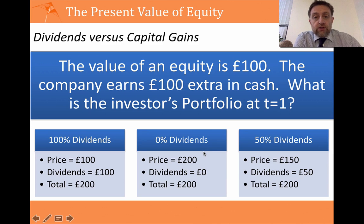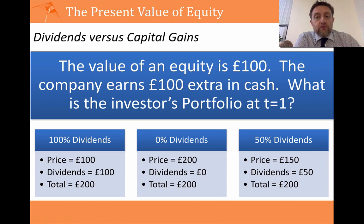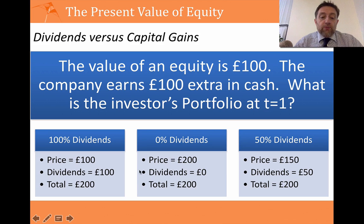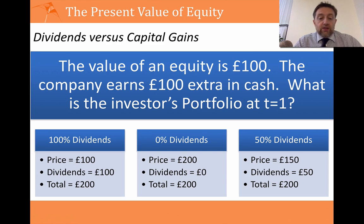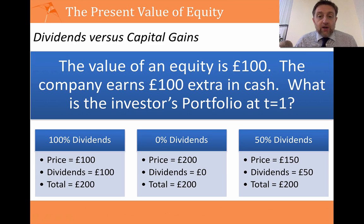The third option is where the company pays half of that money out in dividends and retains the rest for investment. Looking at the first case where you pay 100% out in dividends — that's £100 in cash — you start with a price of £100. You've got dividends of £100, so your return is £100. But the price hasn't changed, because you have received £100 in dividends.